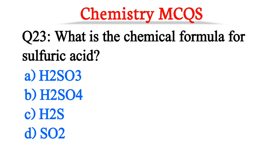Question number 22. What is the chemical formula for sulfuric acid? The correct option is option B, H2SO4.